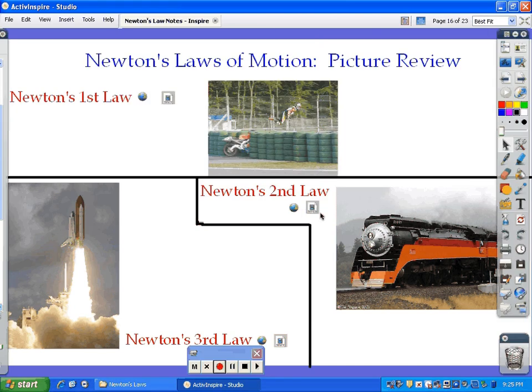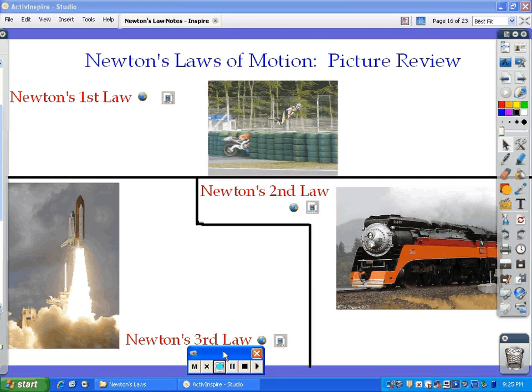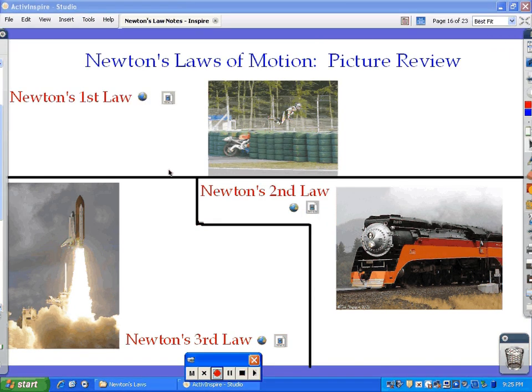Briefly in review: Newton's First Law of motion—object in motion remains in motion. The motorcycle didn't remain in motion; it stopped abruptly. But the man on the motorcycle kept moving because he did not get hit by the tires, so he went flying straight over.